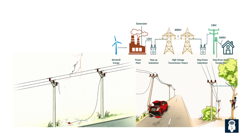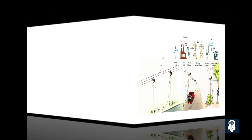Understanding faults in electrical distribution systems is vital for building a resilient and reliable grid. By identifying, managing, and preventing faults, we ensure the continuous flow of electricity that powers our daily lives. Thank you for watching, and don't forget to like, subscribe, and share for more insights into electrical systems.